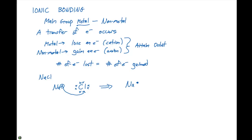The structure, or the Lewis symbol, that results is going to look something like this. This indicates an ionic bond is taking place, which is a transfer of electrons. When this transfer takes place, the sodium is going to have a positive charge, and the chloride is going to have a negative charge.